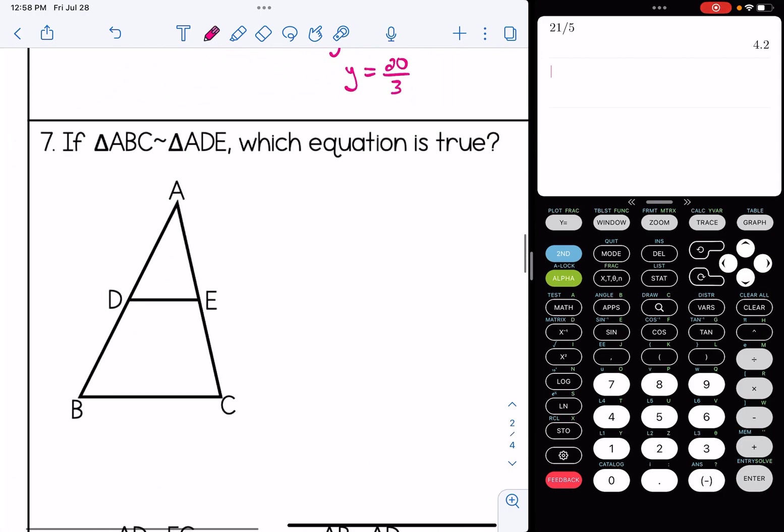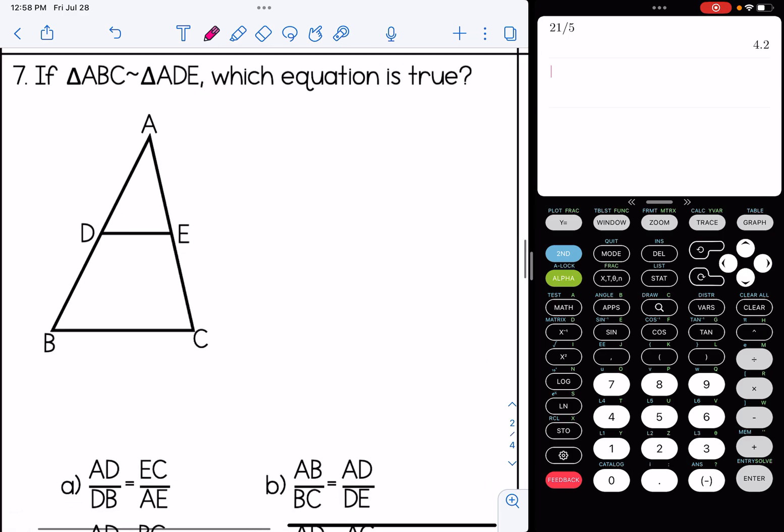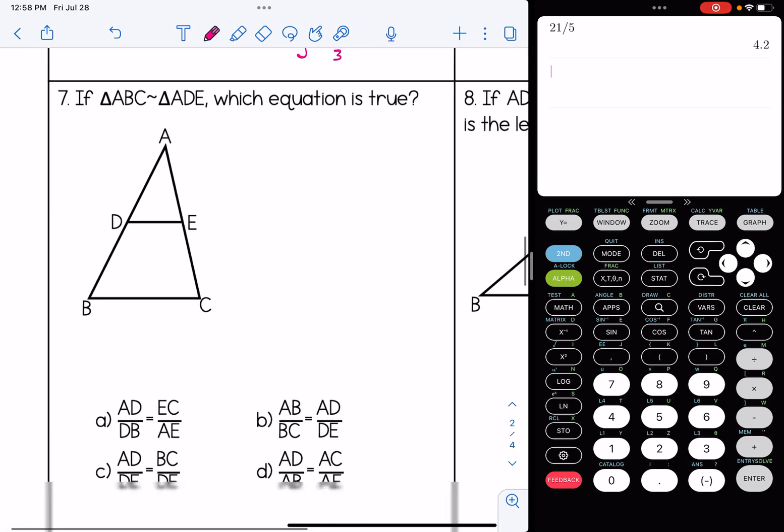Number seven, if triangle ABC is similar to triangle ADE, which equation is true? If we take a look at this here, we're going to look at the four answer choices and the proportions in each of them and see if pieces correspond to one another, because remember when you have similar triangles, the corresponding sides are proportional.